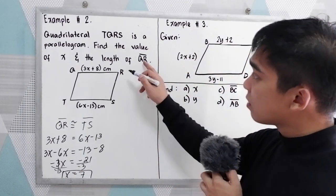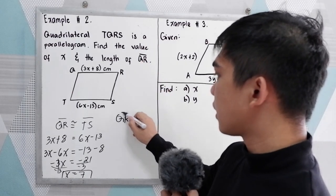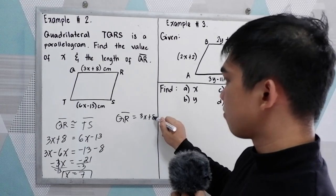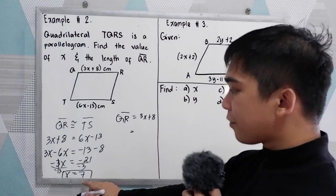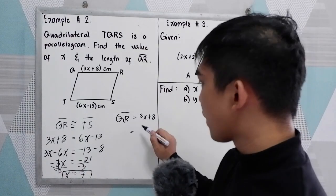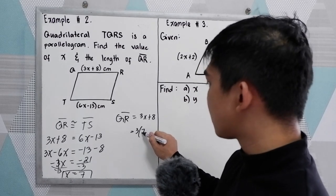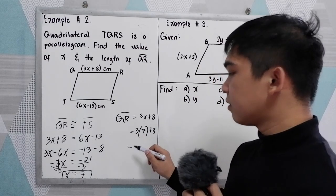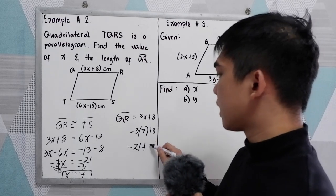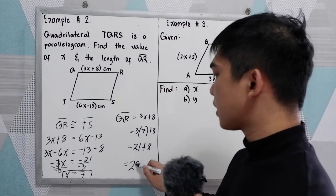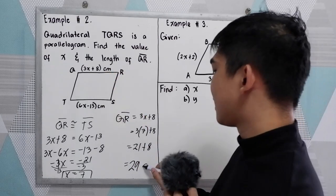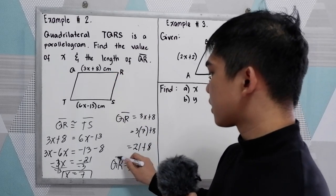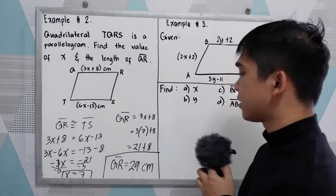Now we can get the value for QR. So QR in our given, that is 3x plus 8. Now we have a value of our unknown x. So we have 3 times 7 plus 8. Now 3 times 7, that is 21 plus 8. That will give us 29, our unit cm. So QR or segment QR is equal to 29 cm.